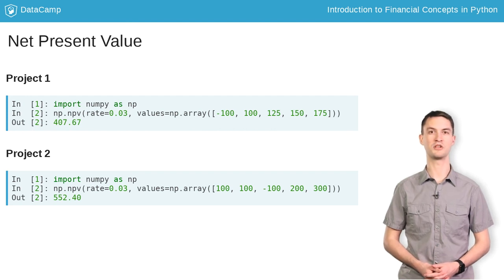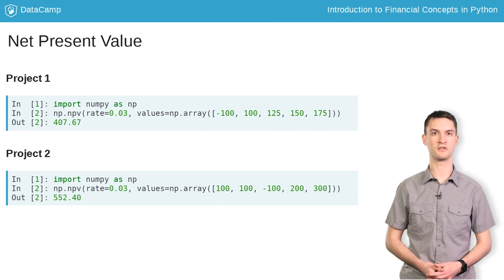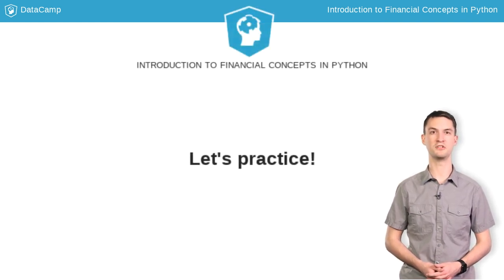By the way, project 2 had a higher net present value of $552 compared to the $407 for project 1. Now it's time for you to do the heavy lifting.